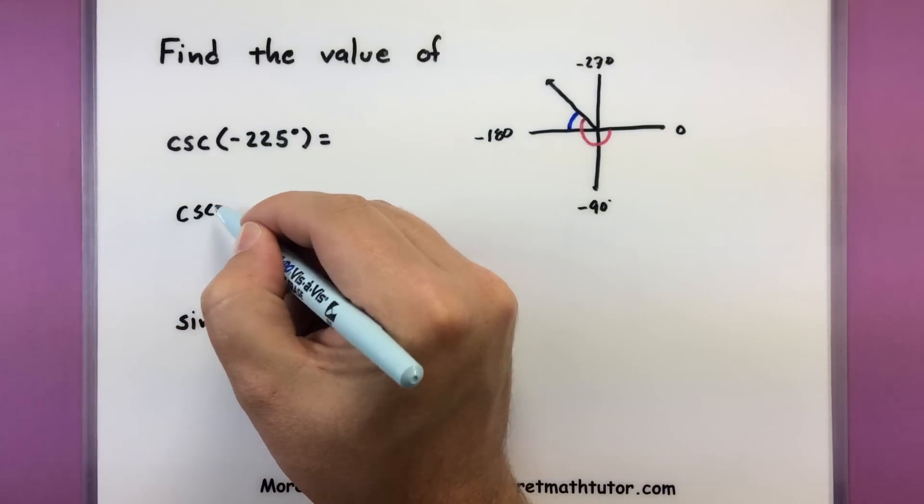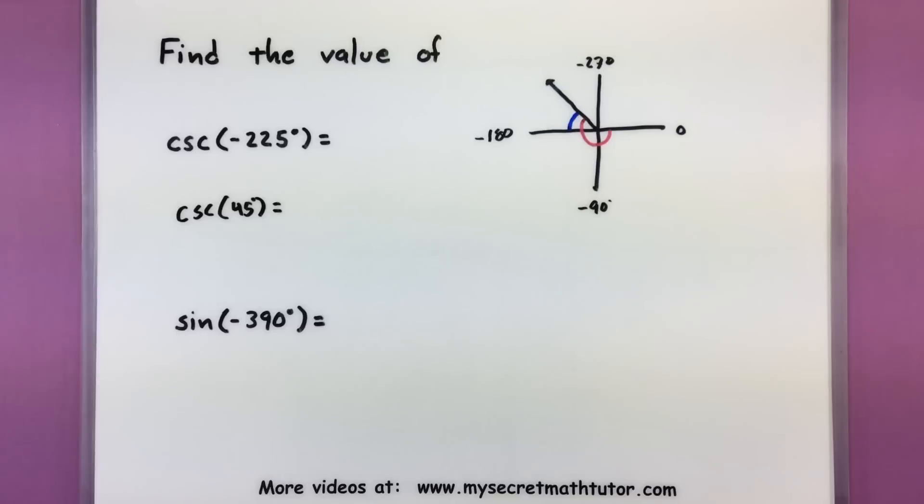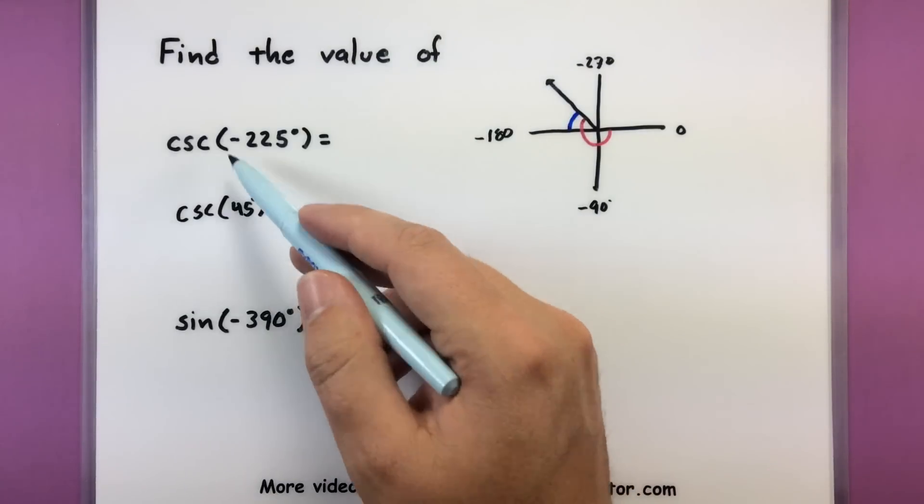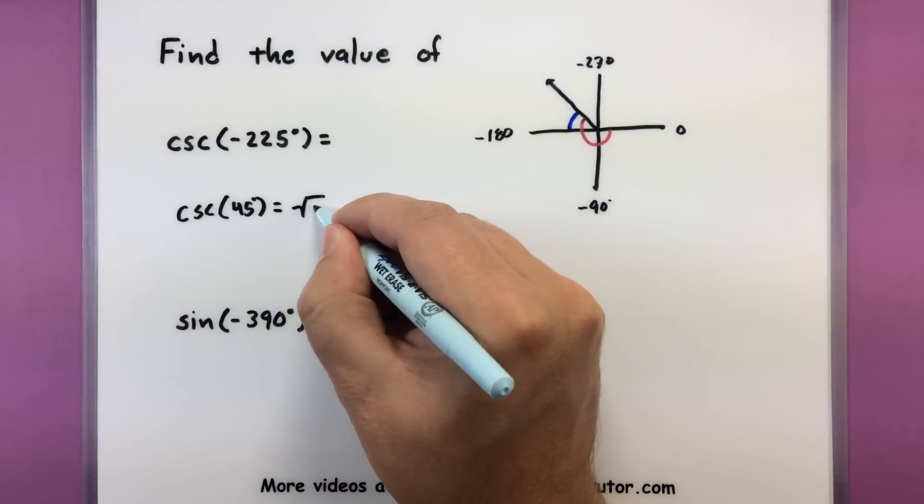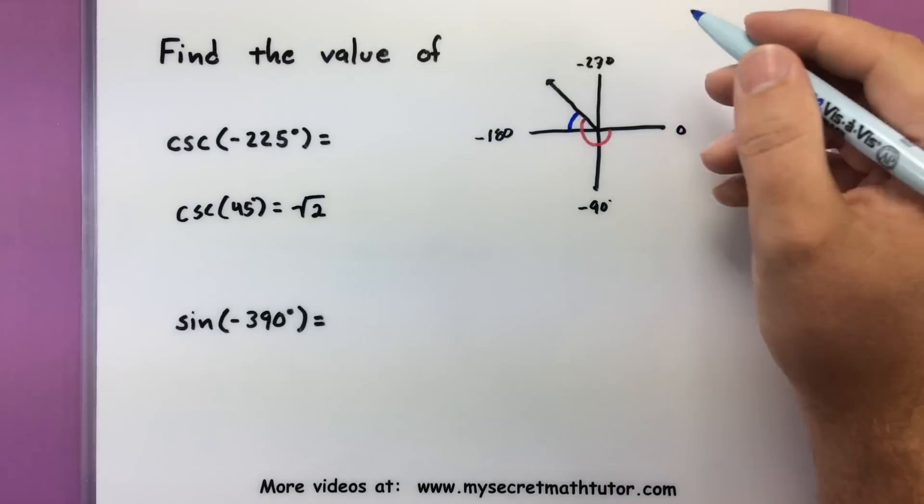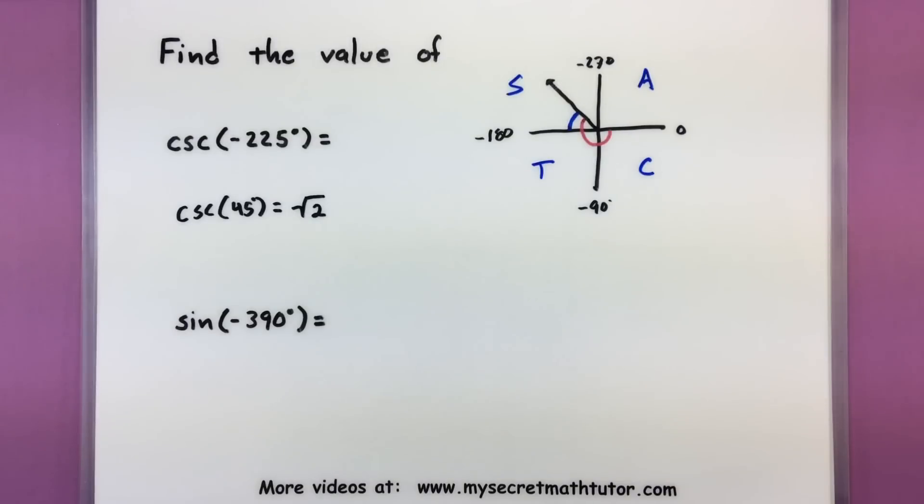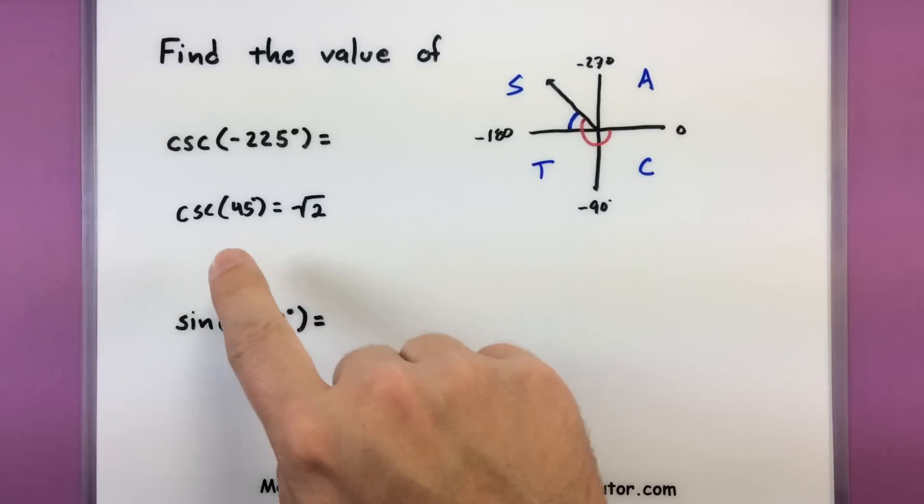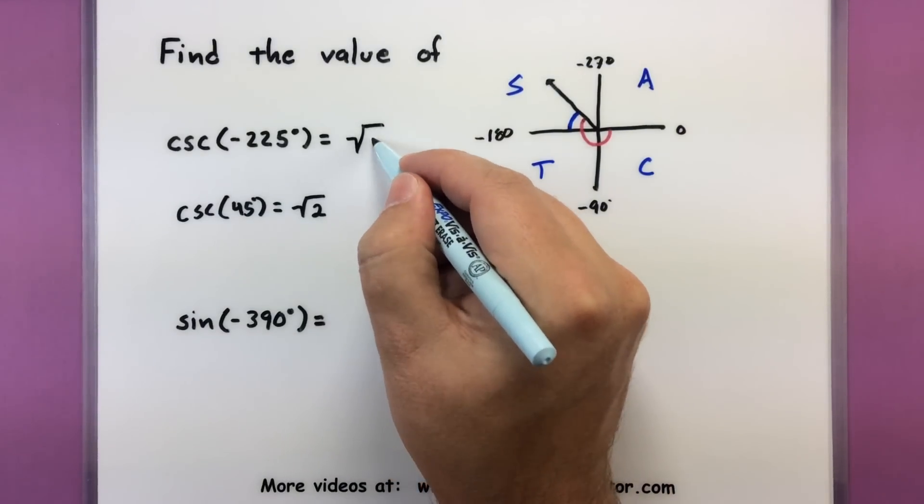So we will use cosecant of 45 degrees. Notice how that reference angle is still positive. Even though I'm dealing with these negative values, I'm going to use the positive reference angle of 45. Looking that value up, I know that it's the square root of two. So let's attach the proper sign. It looks like when we are in quadrant two, sine and its reciprocal, those are going to be the positive functions. And hey, what do you know? Cosecant is the reciprocal of sine, so I know that I need to have this remain positive. So we will say that the value is the square root of two.